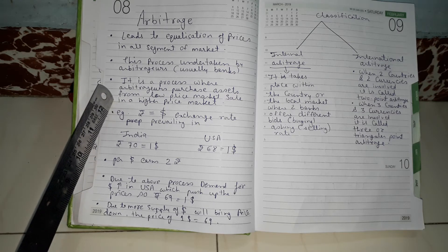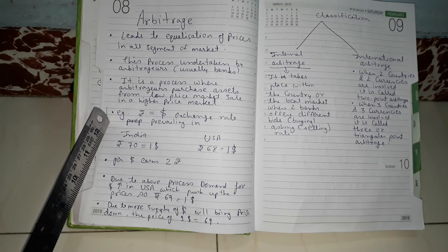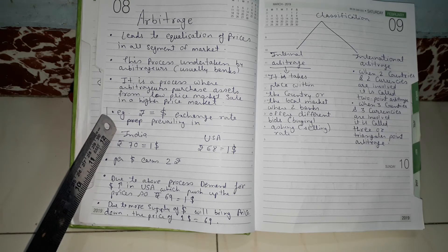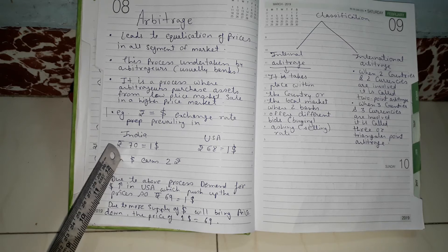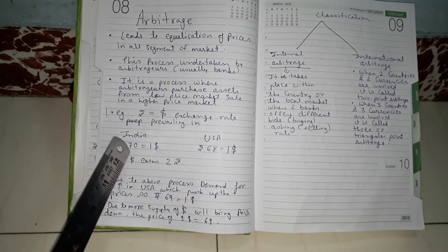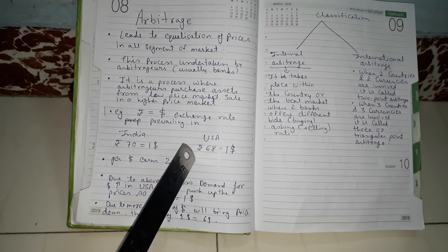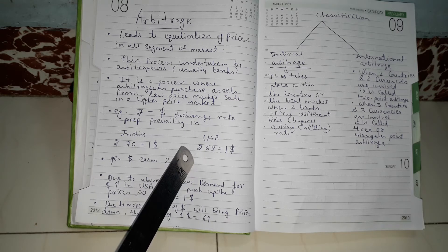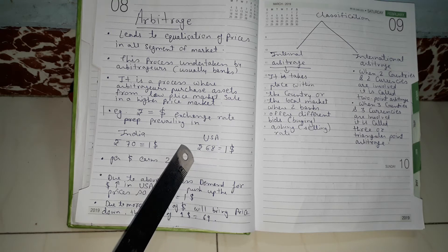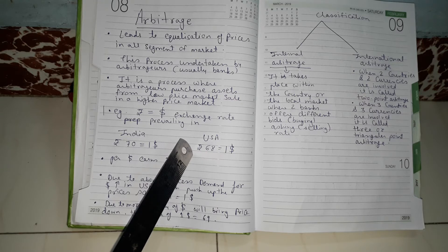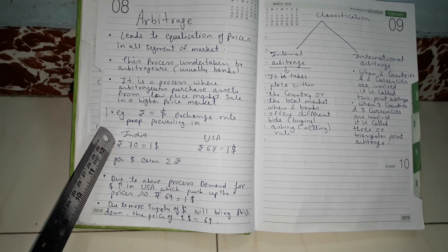To understand this concept, here is an example using the exchange rate of the Indian rupee and the dollar. In India, one dollar is priced at 70 rupees, and in the USA, one dollar is priced at 68 rupees. The arbitrator takes advantage of this situation — buying one dollar at 68 rupees from the USA and selling one dollar at 70 rupees in India.